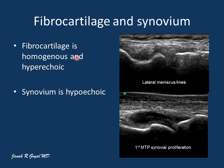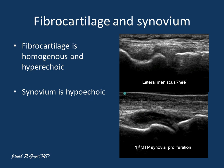The fibrocartilage is homogeneous and hyperechoic. The synovium is hypoechoic and is normally not visible. Here you can see the MTP joint with the fibrous capsule, and the synovial lining showing thickening due to synovial proliferation, which appears as a hypoechoic thickening of the synovial lining.